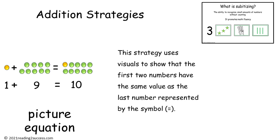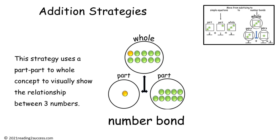As taught in the first video on subitizing, kids learn to use picture equations, using visuals to show that the first two numbers have the same value as the last number represented by the equal symbol. As taught in the second video, kids learn to use number bonds — a part, part, to whole concept — to visually show the relationship between three numbers.